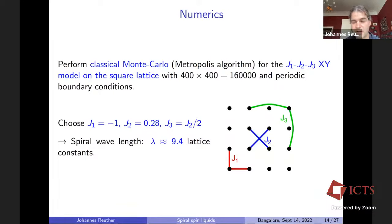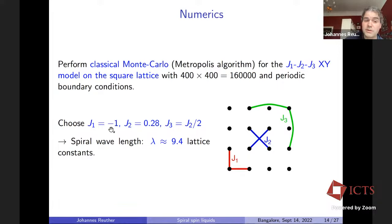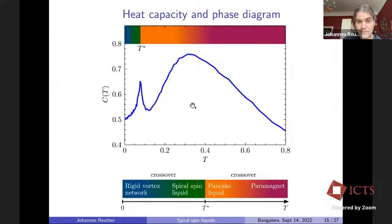Let's see if these analytic results appear in actual spin models numerically. We performed classical Monte Carlo simulations of a J1, J2, J3 XY model on the square lattice with first-to-third-neighbor interactions, treating quite large system sizes with periodic boundary conditions. We choose J1=−1 so all spiral properties emerge from a ferromagnetic model, with J2 just slightly above the threshold of one quarter, and J2 and J3 in the appropriate ratio, giving a spiral wavelength of roughly nine lattice constants.